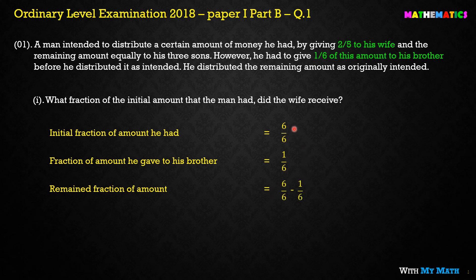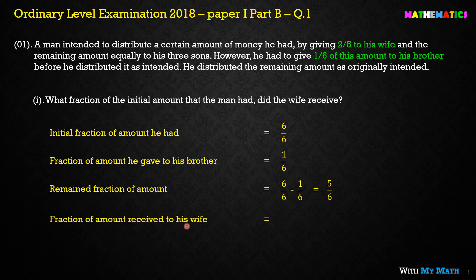We subtract: 6/6 minus 1/6 gives us 5/6. That is the remaining amount in his hand after giving to his brother. Now, what fraction of the initial amount did the wife receive? From this remaining amount, he is going to give 2/5 portion to his wife.